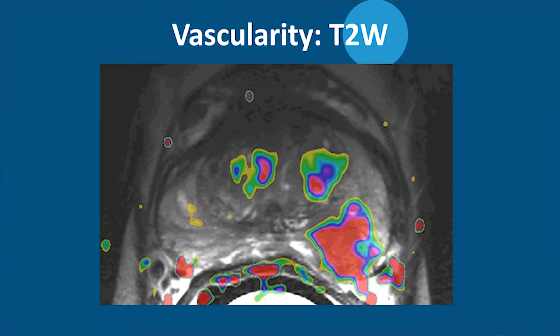You can also look at vascularization. If you have a high vessel density and permeability of vessels, it means that there is either inflammation or prostate cancer. The combination of the three — tissue structure, diffusion cell density, and vascularization — makes a diagnosis.